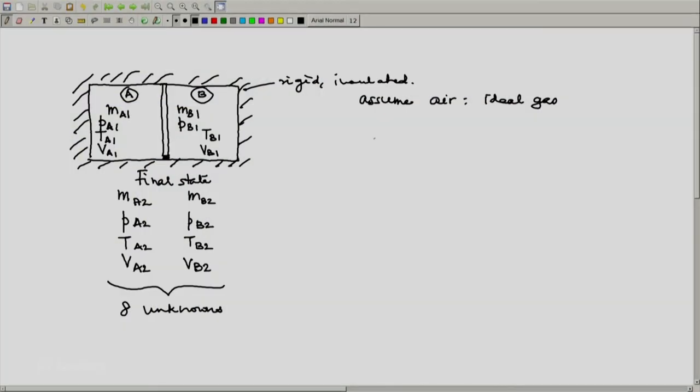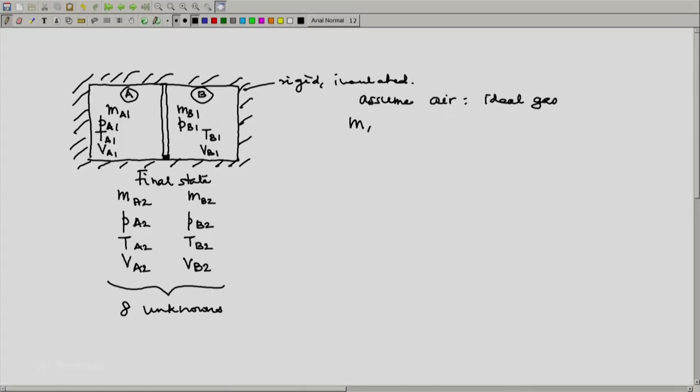First, although A plus B together is a closed system, because the piston is leak-proof, mass on side A remains unchanged. Mass on side B remains unchanged. So one equation would be MA2 is MA1. Similarly MB2 is MB1. Two equations.